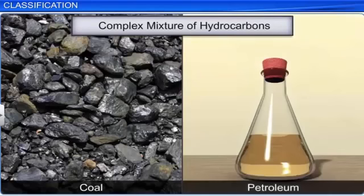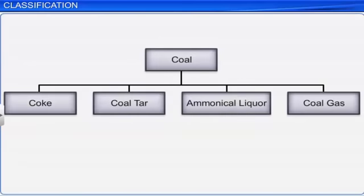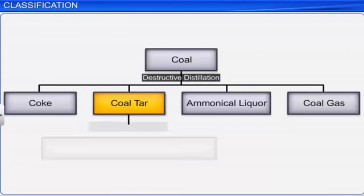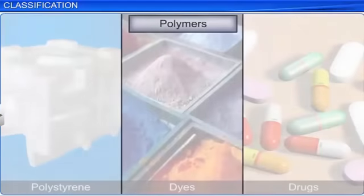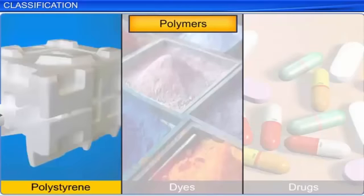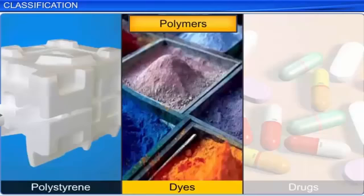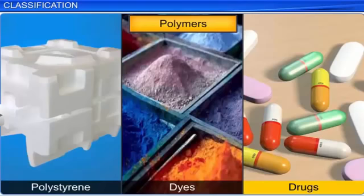Coal and petroleum are complex mixtures of hydrocarbons. Coal tar, a product of destructive distillation of coal, when subjected to fractional distillation, produces various aromatic compounds including benzene. These compounds are used in the preparation of various industrially useful products such as polymers like polystyrene, dyes, drugs, etc.